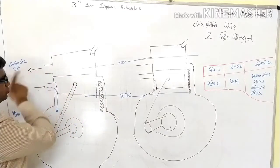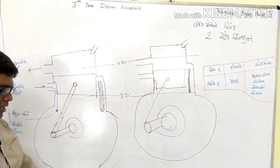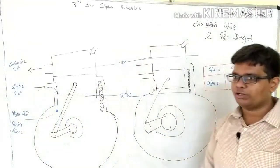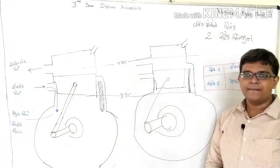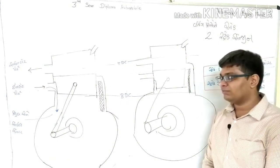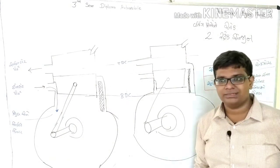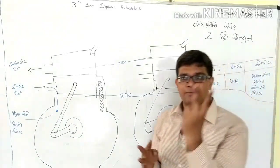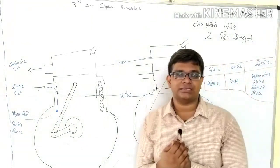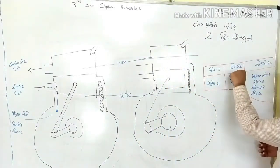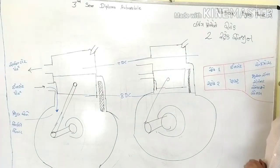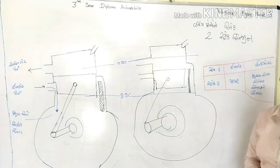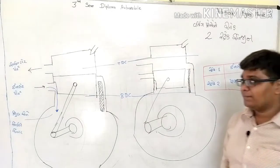Up to this point we need to understand: the 4-stroke engine and 2-stroke engine processes are similar, but processes that required 4 strokes in the 4-stroke engine are completed in just 2 strokes, because 2 processes happen together — inlet and exhaust occur simultaneously.